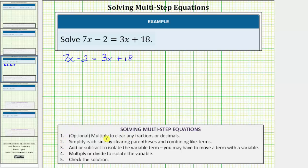For step one, we don't have any fractions or decimals. In step two, both sides of the equation are already simplified. So we move to step three. Step three is add or subtract to isolate the variable term.